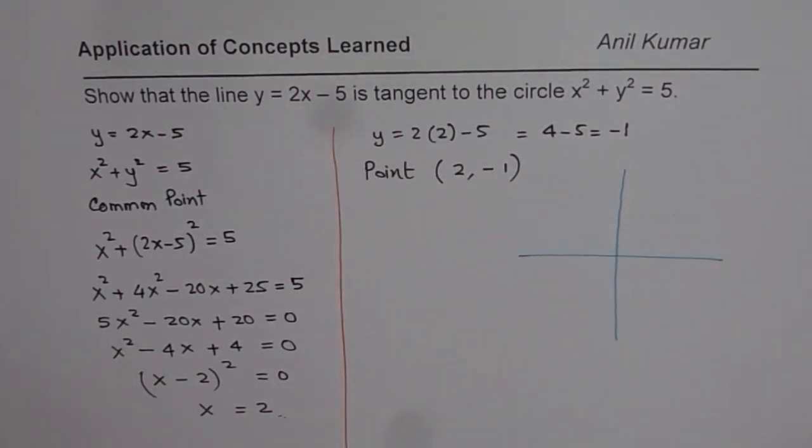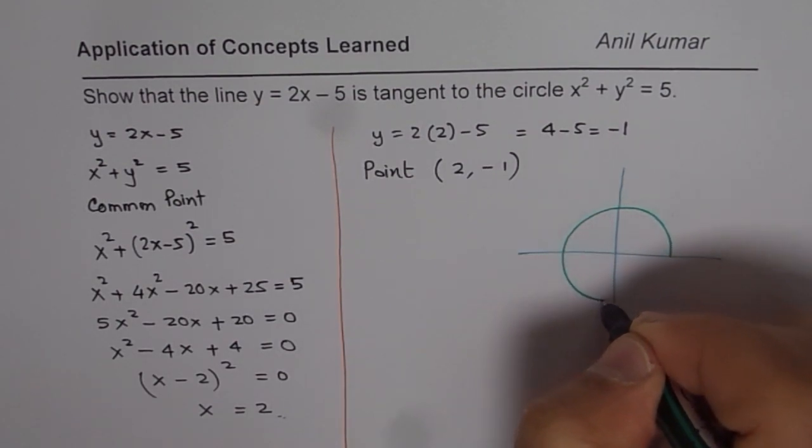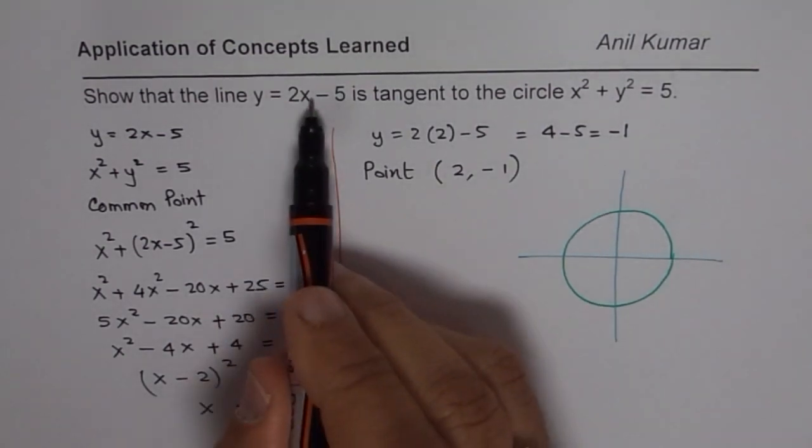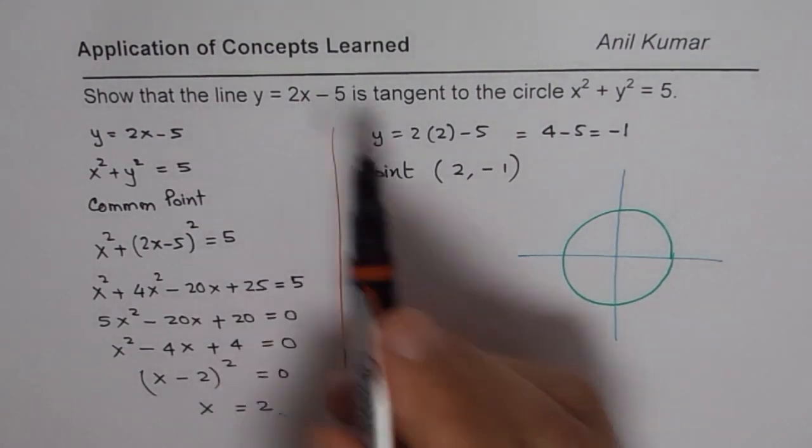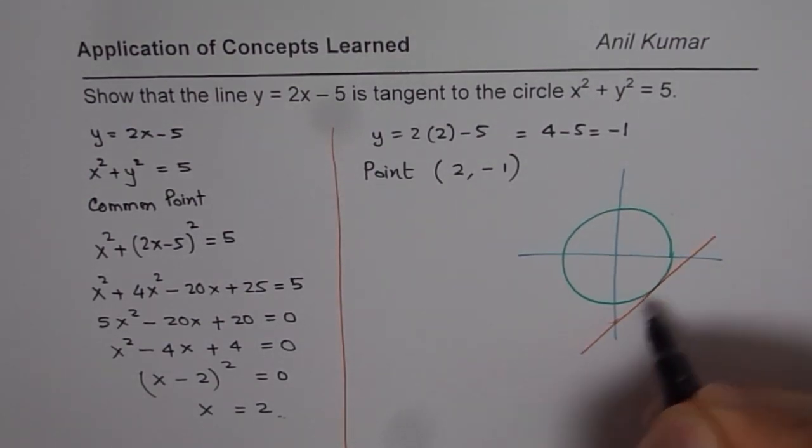So you could sketch a diagram saying that, well, this is the coordinate system, and let us say this is the circle for you. And in this circle, we have a line, and what we got 2x minus 5. So it's positive slope somewhere here, negative. So probably the line which goes like this is the line you are talking about.